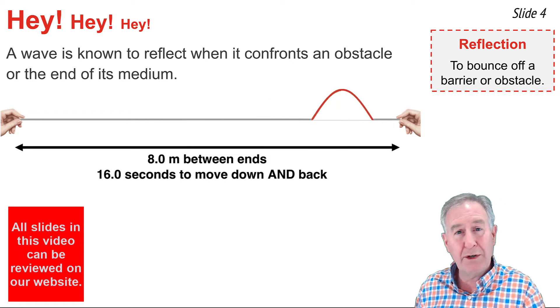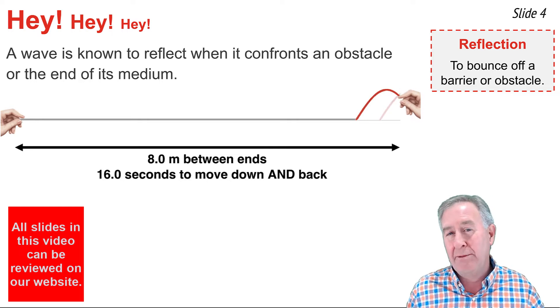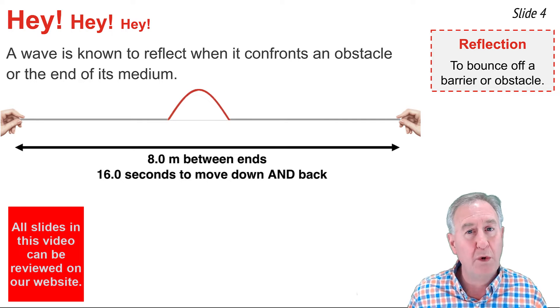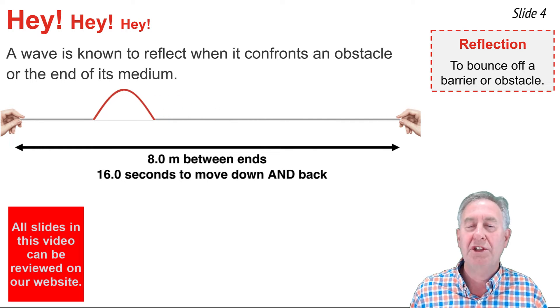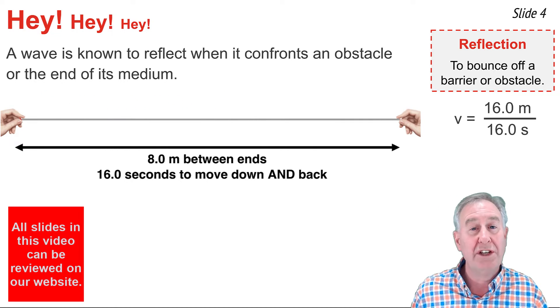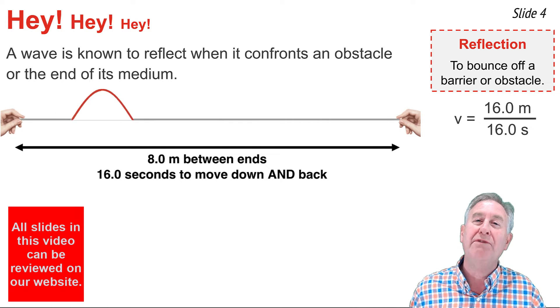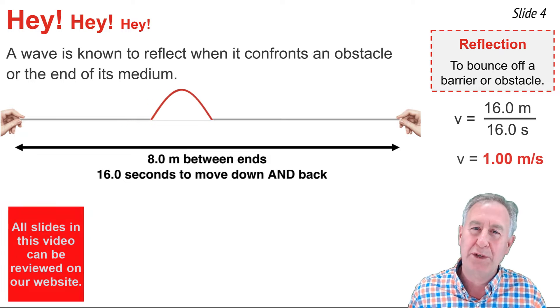In order to solve for the speed of a wave in a reflection situation, it's important to match the distance to the time. The distance of 8 meters is the one-way distance, and the time of 16 seconds is the two-way distance. So I'm either going to have to half the time or double the distance. I'm going to choose to double the 8 meters, which gives me 16 meters down and back to match the 16 seconds down and back, and when I solve for speed, I get 1 meter per second.